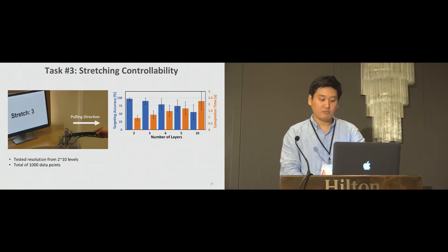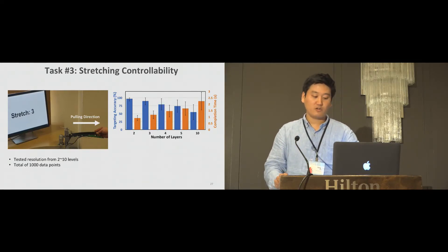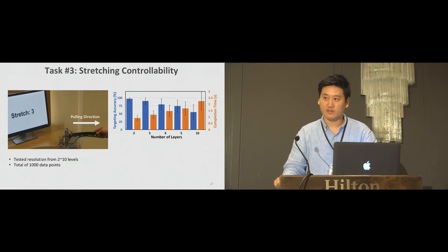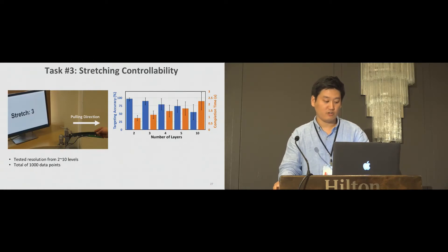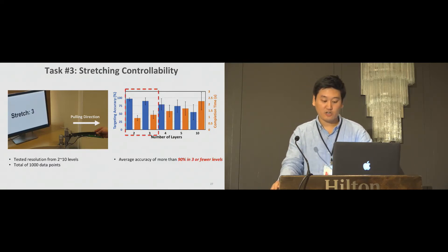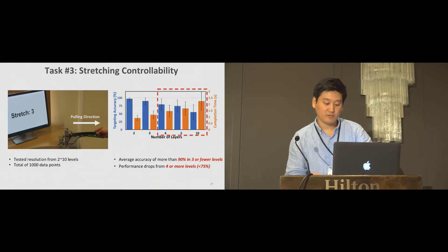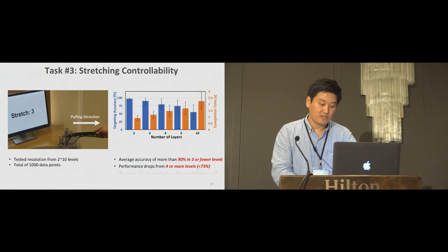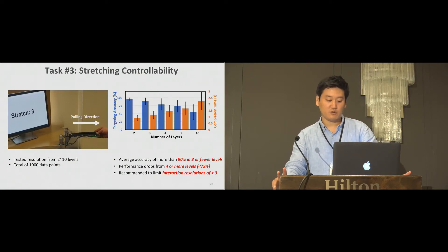We also evaluate the participants' targeting controllability with stretch sensing. Our goal was to confirm how many stretching resolutions users can handle. We evaluate with stretching resolution from 2 to 10 levels. We found the average targeting accuracy was greater than 90 percent if three or fewer levels were provided. However, the performance drops sharply as four or more stretching levels were provided. Therefore it is recommended to limit the interaction to three or fewer levels for robust stretching interactions.